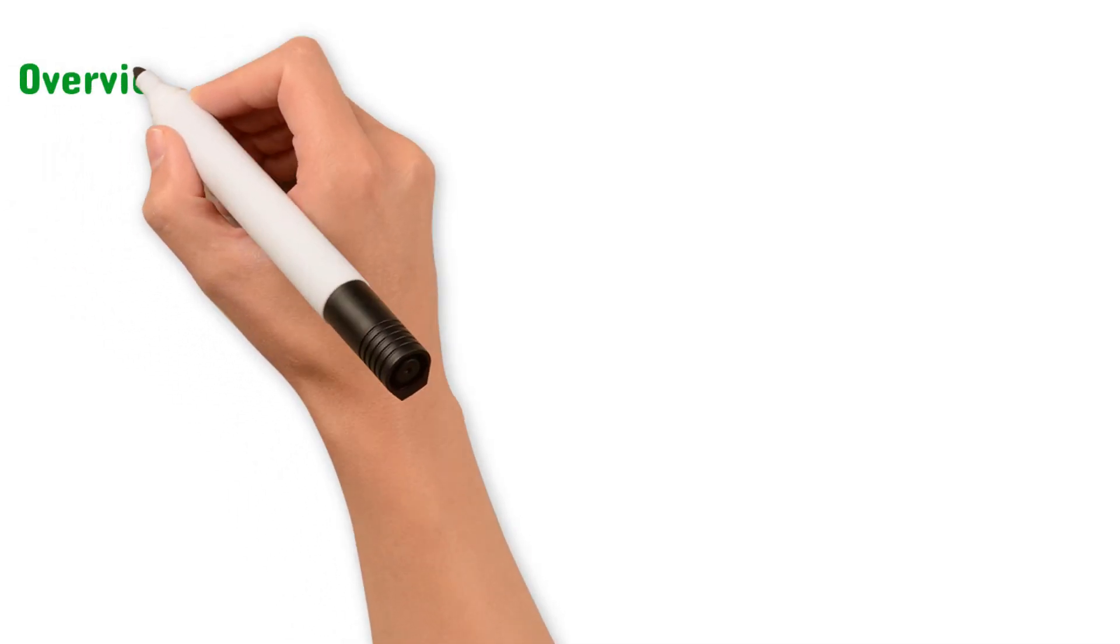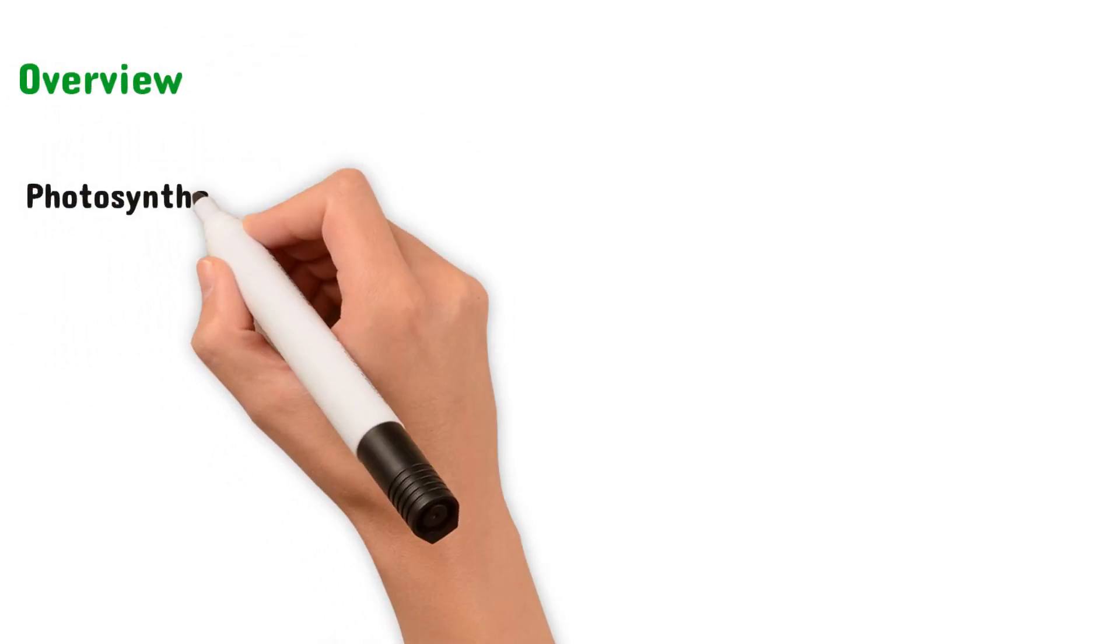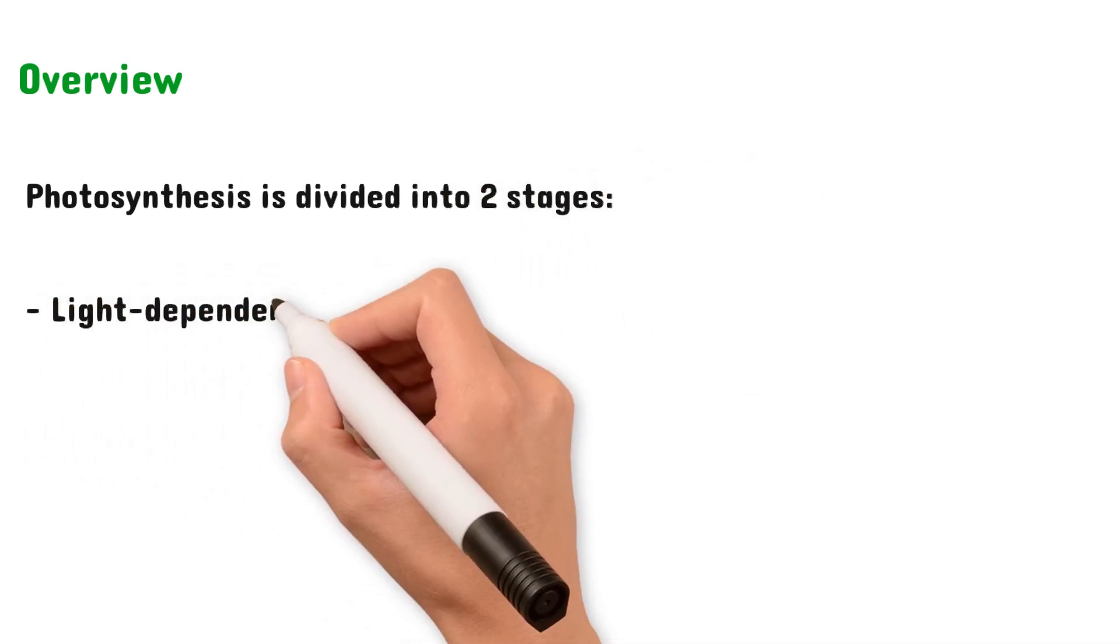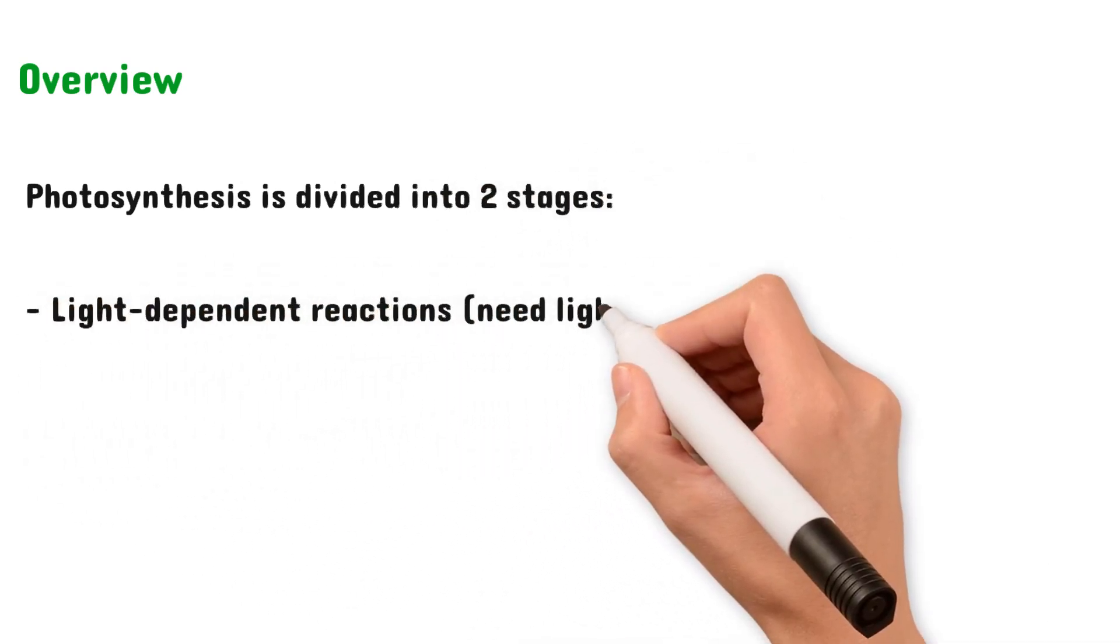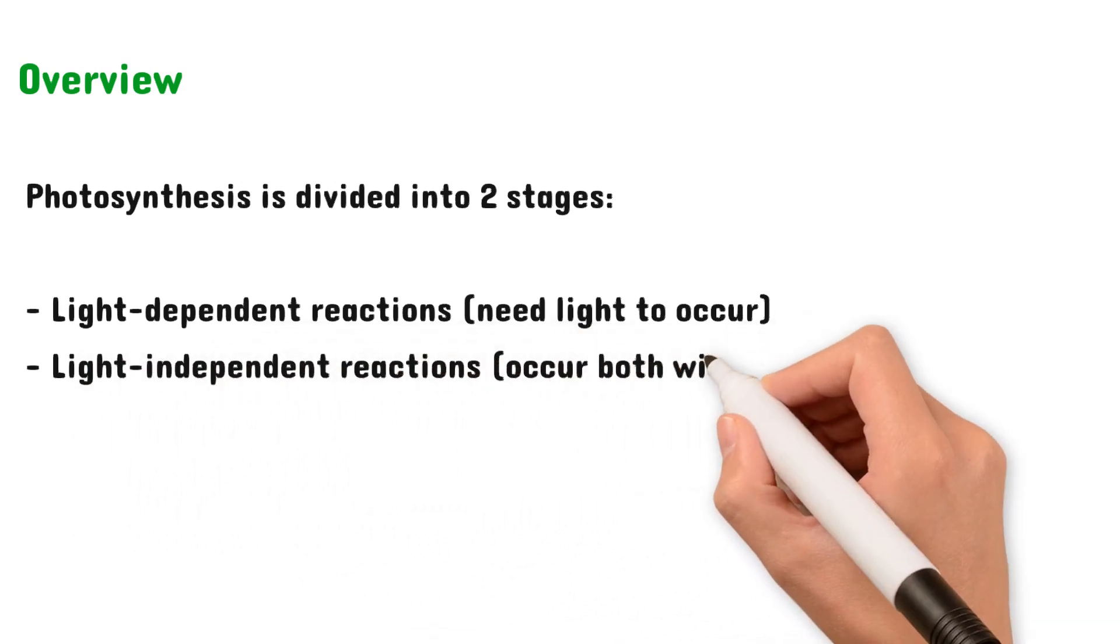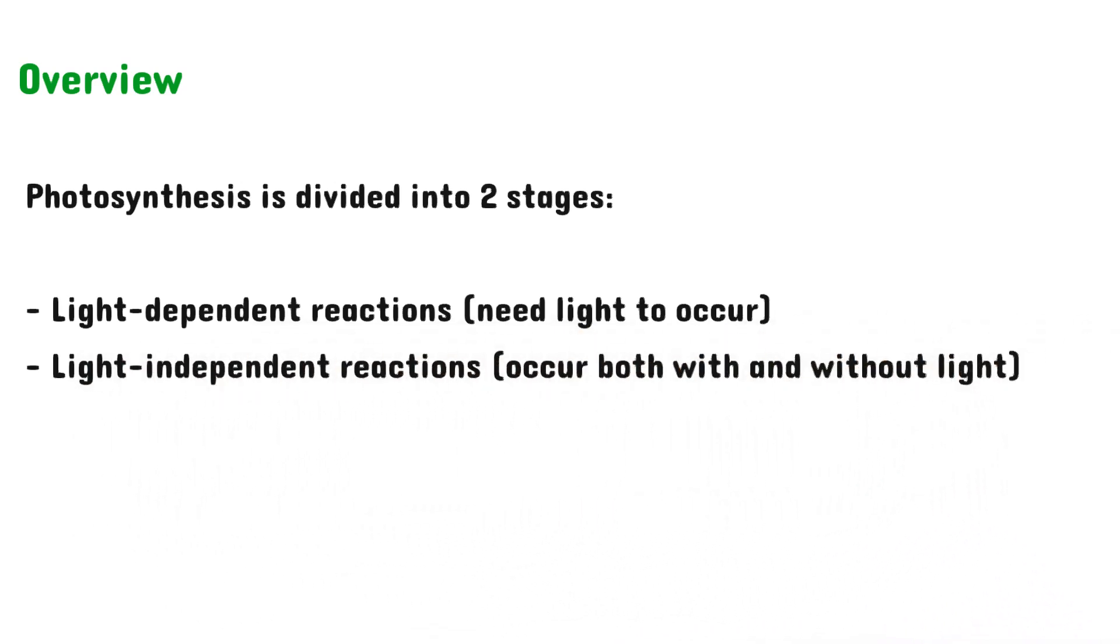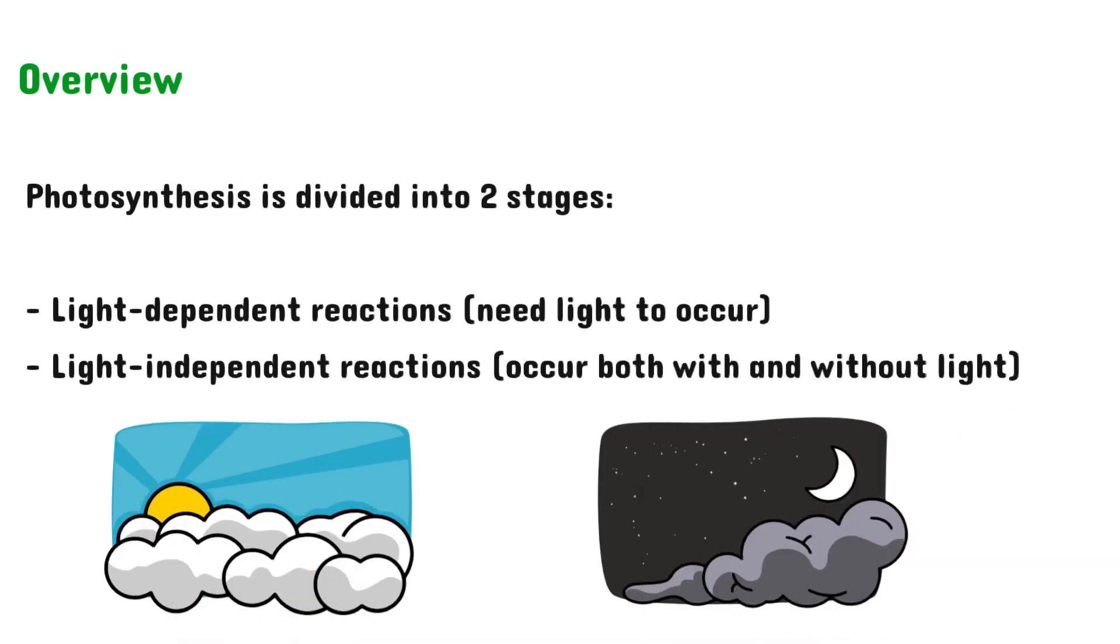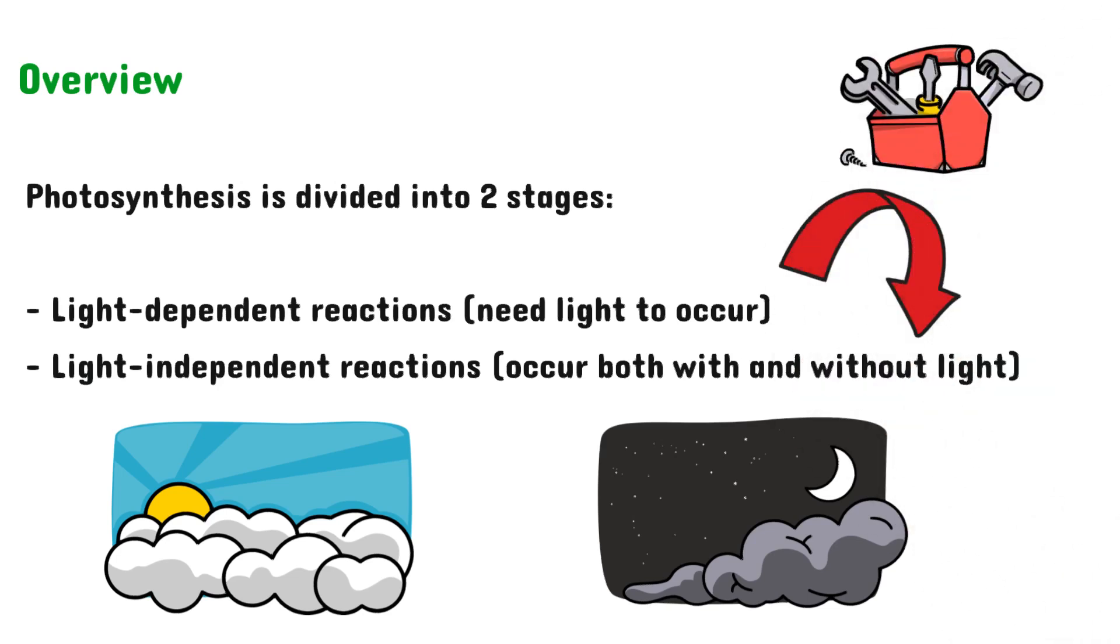Let's begin with an overview. Photosynthesis can be split into two stages. The light-dependent reactions which require light to occur and the light-independent reactions which can occur both in the presence and absence of light. Don't get confused by thinking that light-independent reactions only occur in the dark. You also have to remember that the products from the light-dependent reactions are used in the light-independent reactions.